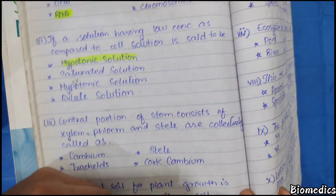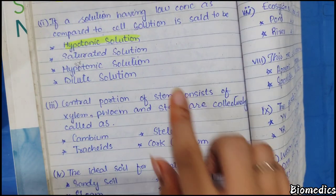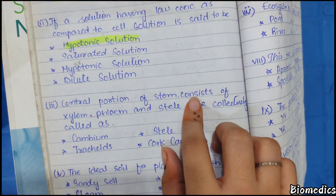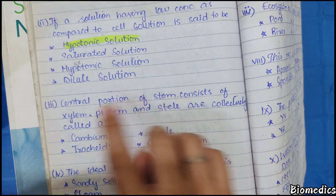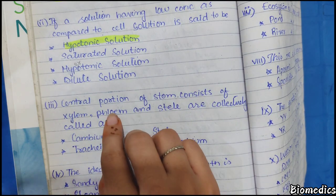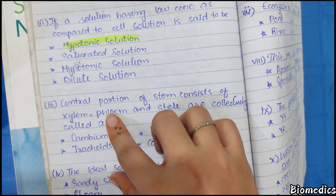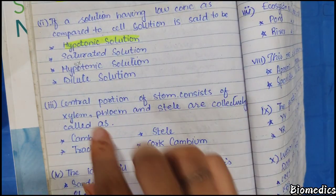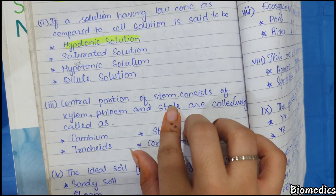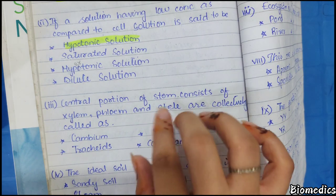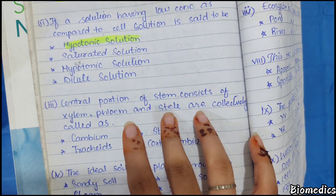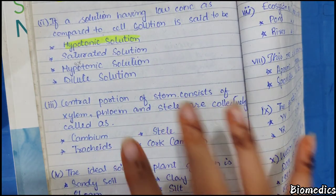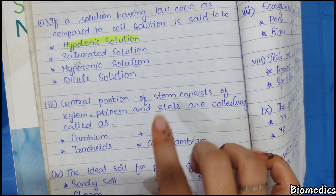Next, the central portion of the stem consists of xylem, phloem, and stele. What do we call them collectively? The answer is given here, but this MCQ has been misprinted in the model paper.